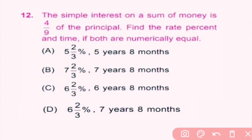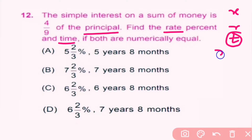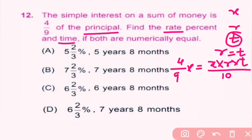Question number 12: the simple interest on a sum of money is 4/9 of the principal. Find the rate percent and time if both are numerically equal. We first consider the principal as x, rate as r, and time as t. Since both are numerically equal, r equals t. According to the question, simple interest equals 4/9 of x, which equals principal into rate into time divided by 100.